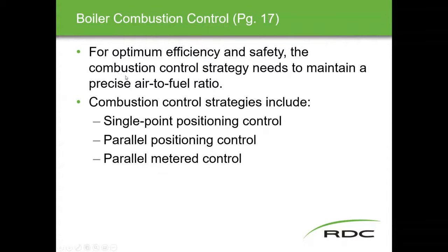For boiler combustion control, optimum efficiency and safety requires maintaining the correct air-to-fuel ratio. What controls the air? The forced air fan controls how much air goes into the boiler; the induced fan controls how much air comes out; and the fuel is controlled by the fuel valve. We'll look at single point, parallel positioning, and parallel metered combustion control strategies.